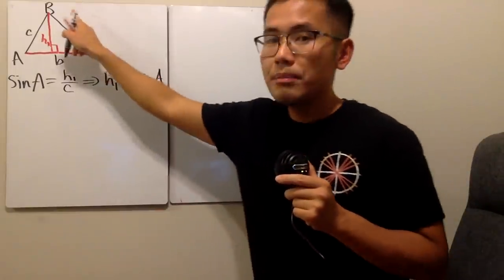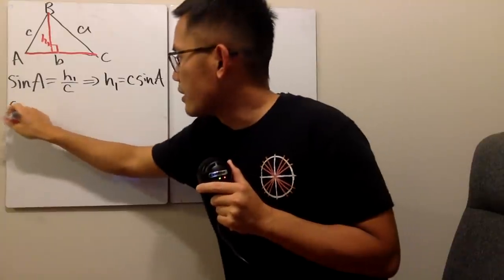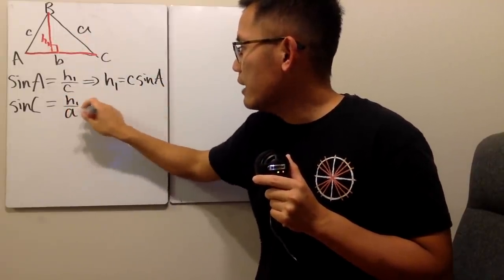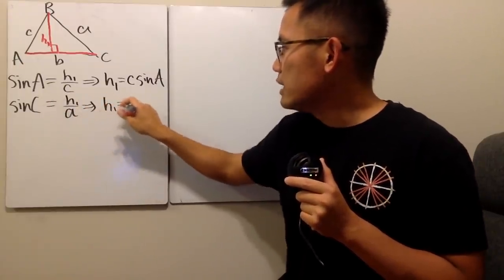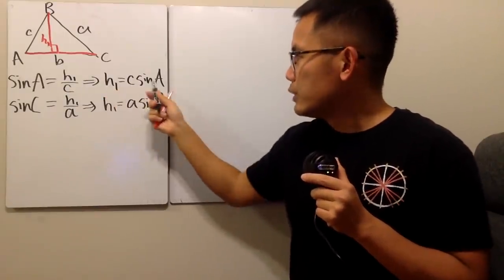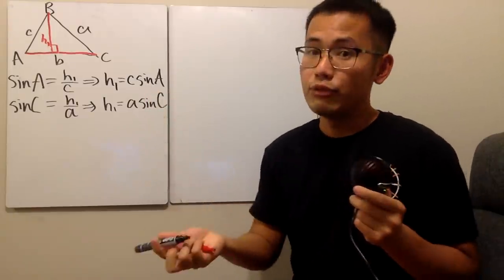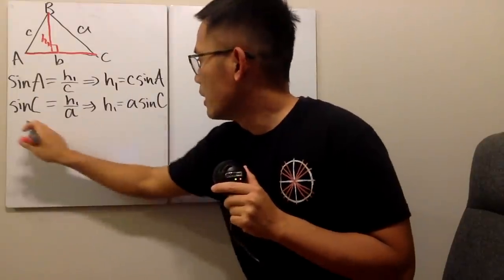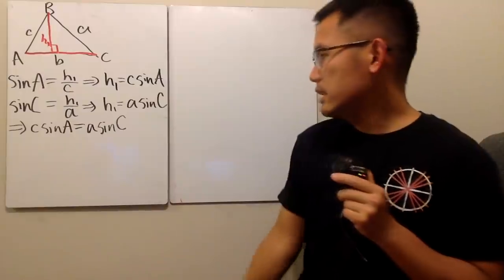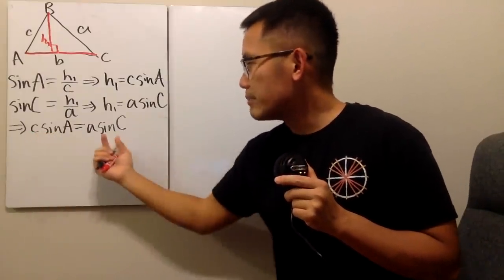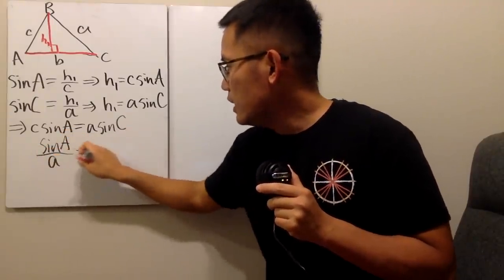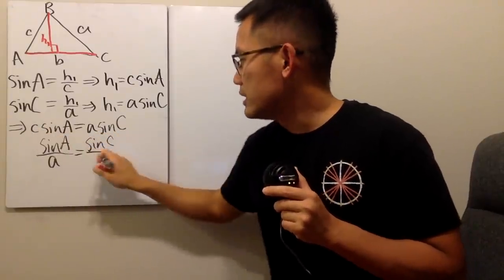Then we do the same thing but with this triangle — look at sine of angle C right here. In this case, this is still our opposite and this is the hypotenuse, so we have h1 over a. Multiply a on both sides, we get h1 is equal to little a times sine of angle C. Now h1 equals c·sine A, and h1 equals a·sine C, so these two must be equal. We get c times sine A equals a times sine C, then dividing both sides by c and by a gives us sine A over little a equals sine C over little c.